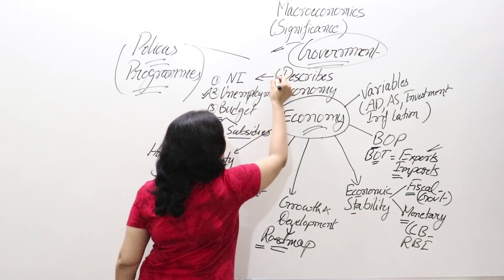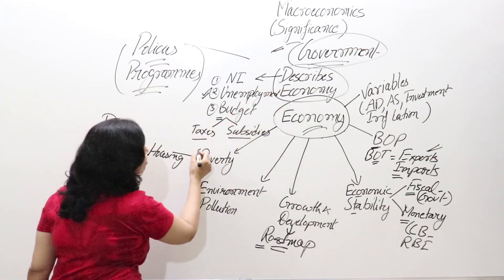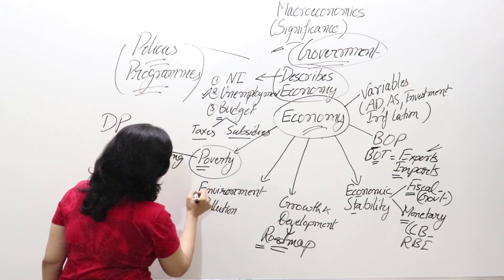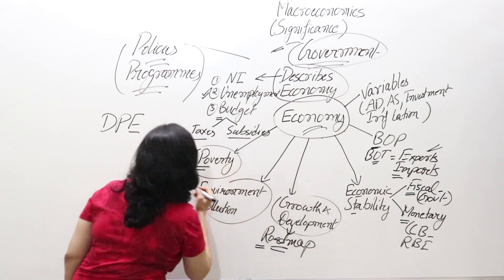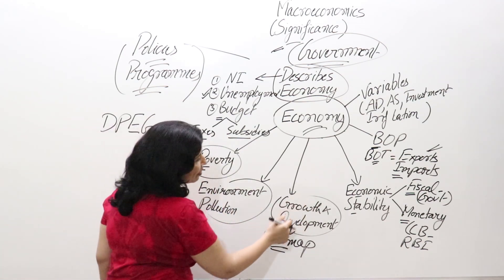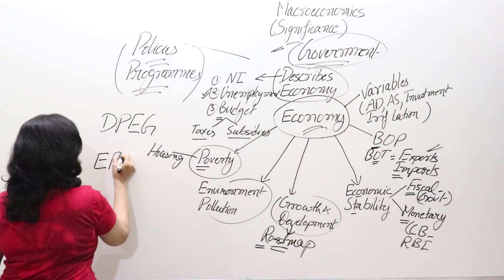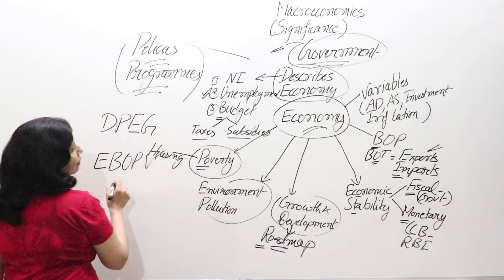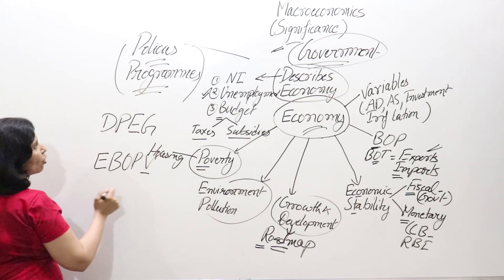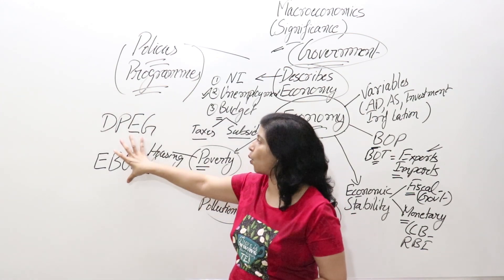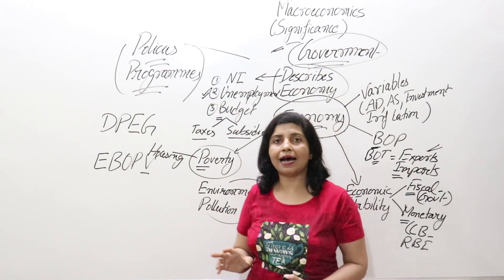To summarize the significance of macroeconomics, we can form a mnemonic code: D for describes economy, P for poverty, E for environment pollution, G for growth and development — giving us DPEG. Then E for economic stability, B for balance of payments, and V for various variables — giving us EBOP V. So the full code is DPEG EBOP V.